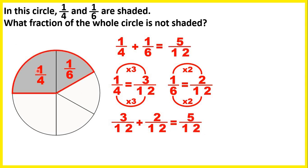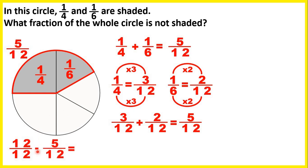So we find the fraction not shaded by subtracting 5 twelfths from 1 whole. Now 1 whole is the same as 12 twelfths, so if we subtract 5 twelfths, that gives us 7 twelfths. So 7 twelfths of the circle is not shaded. Because 5 twelfths shaded plus 7 twelfths not shaded gives us 12 twelfths altogether, and 12 twelfths is the same as 1 whole circle.